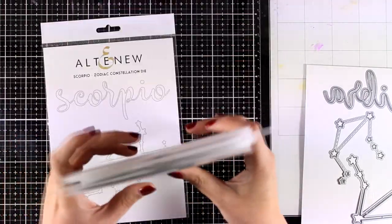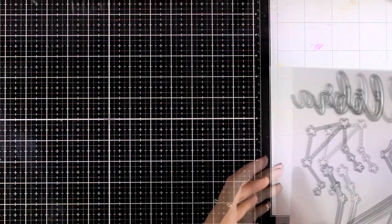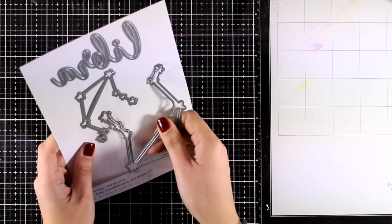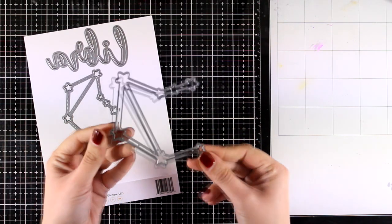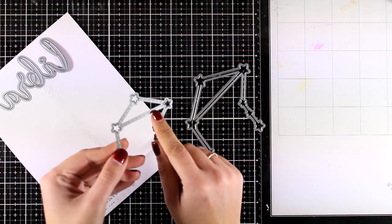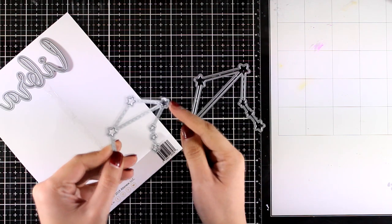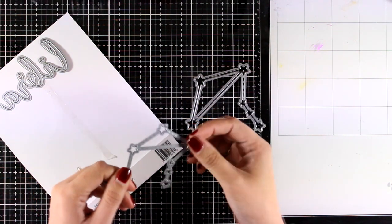Now for today I'm going to use my own, and I'm a Libra, so I'm going to use one of the dies, the bigger one. In between the stars this one cuts out a line, while if you use the smaller one it does cut out the stars but in between it's going to add a little stitching which is going to give a beautiful detail on your paper.